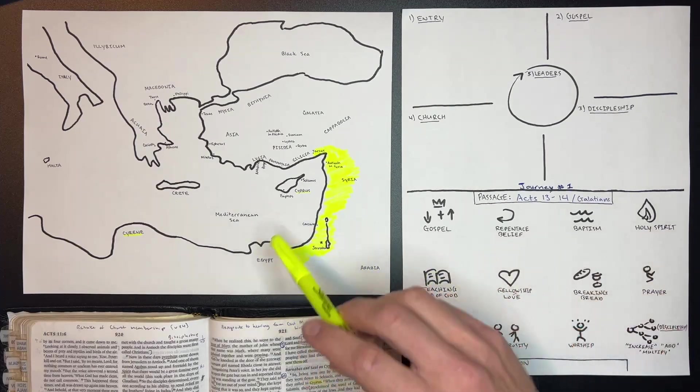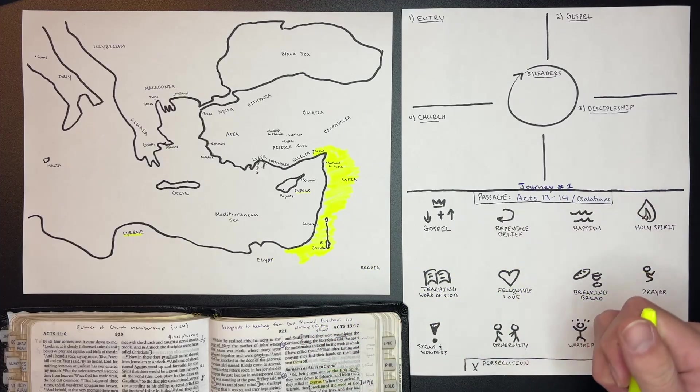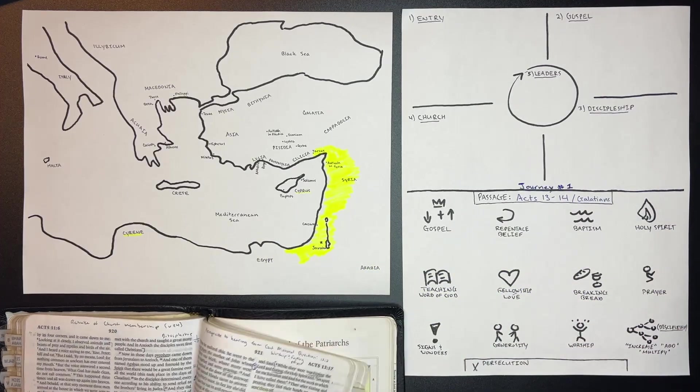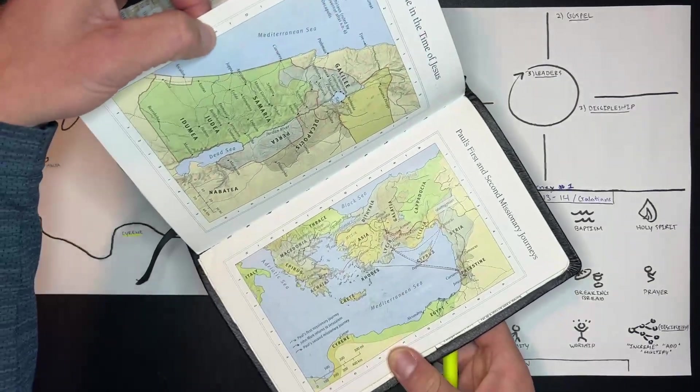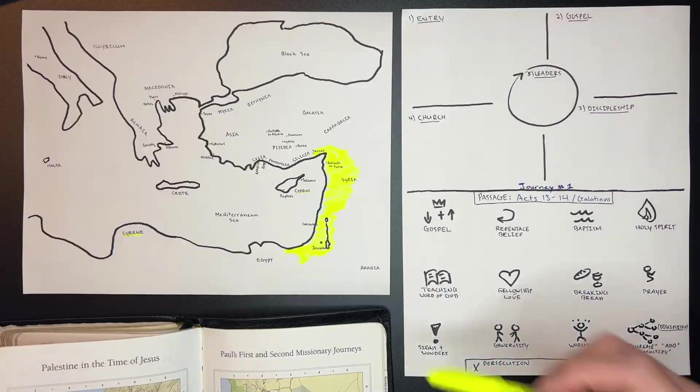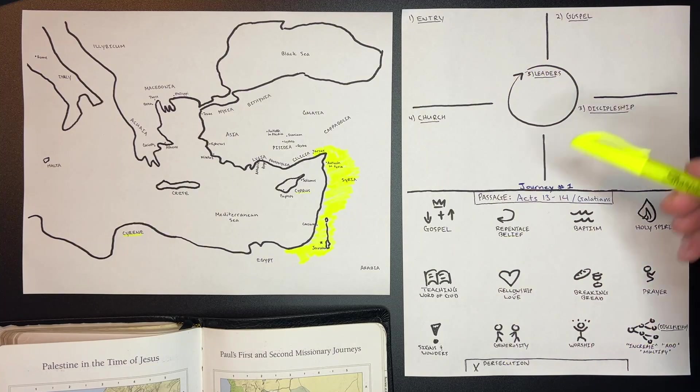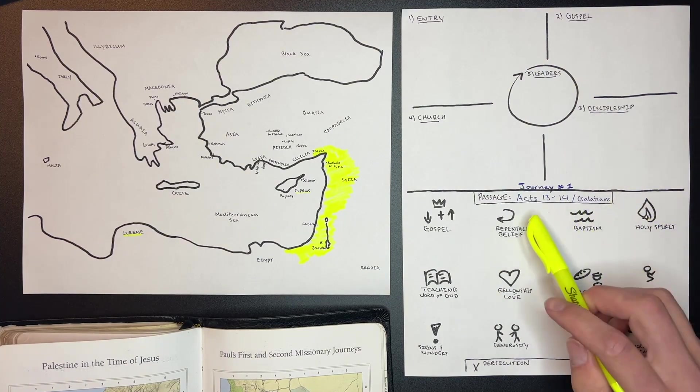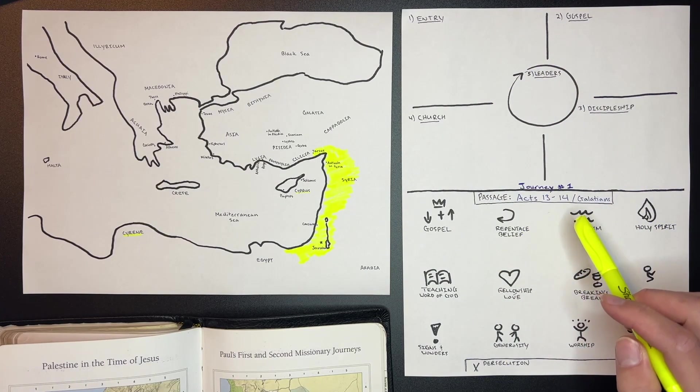So to draw a map, you can either copy this one, download the one in the description, or you can simply turn to the back of your Bible and look for the map that looks like this. Once you have a map drawn out and this piece of paper drawn out, you can begin to study Acts 13 and 14.